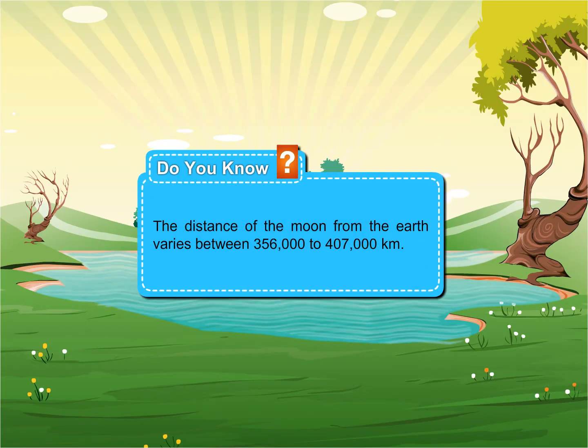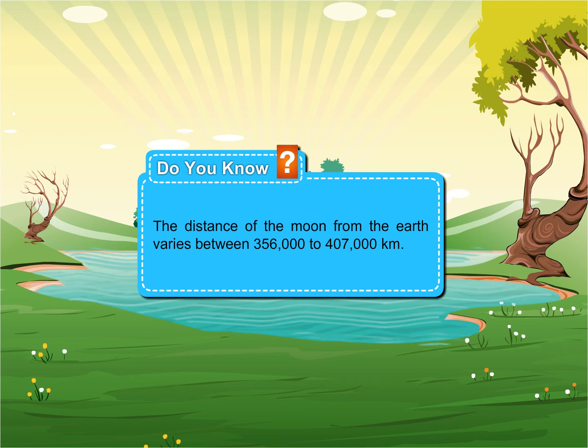The distance of the moon from the Earth varies between 356,000 kilometers to 407,000 kilometers.